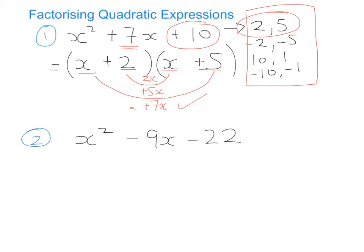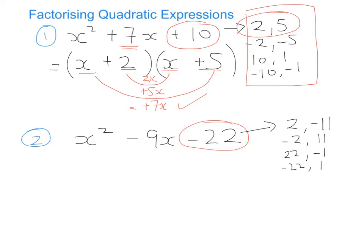We're going to do this the exact same way — look at the number without an x or x² and ask what two numbers multiply to give you -22. Be careful because when it's a negative number you need to take that into account. So: 2 multiplied by -11, or -2 multiplied by 11, or 22 multiplied by -1, or -22 multiplied by 1. Now look at those factor pairs and ask which adds together to give -9.